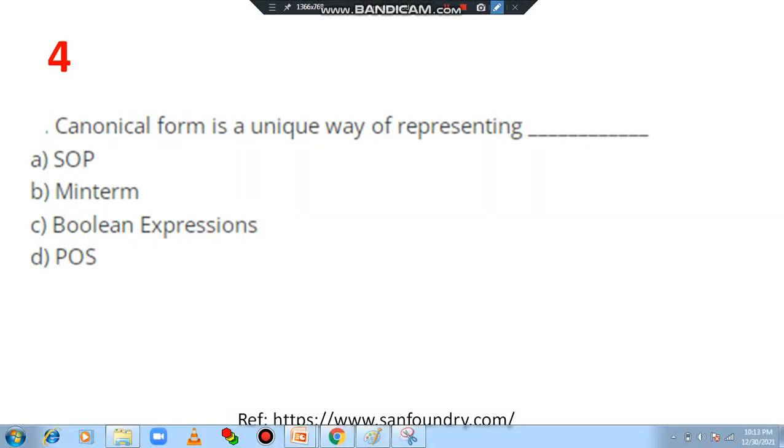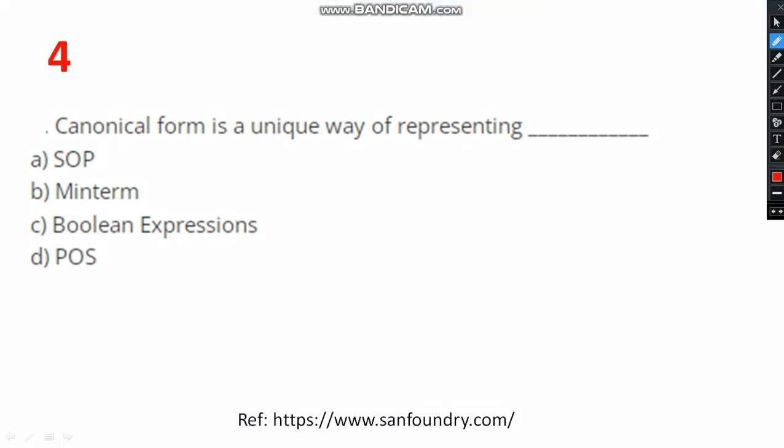Moving on to fourth question. Canonical form is unique way of representing dash. SOP, then min term, boolean expression, POS. Of course, you know that canonical form is one of the ways of simplification of boolean expression. So please do select option C. Option C is the correct answer.